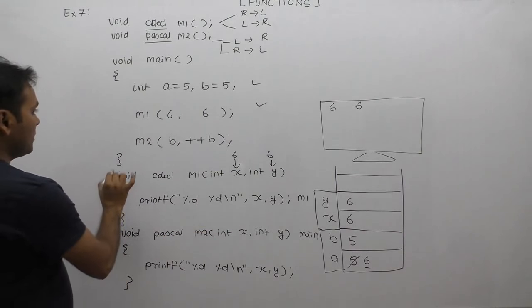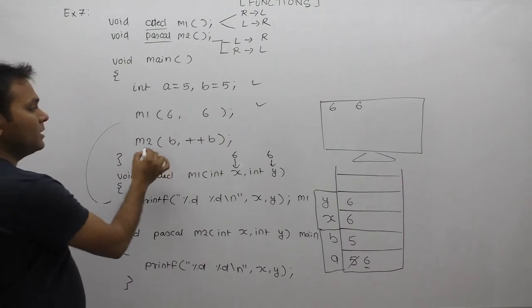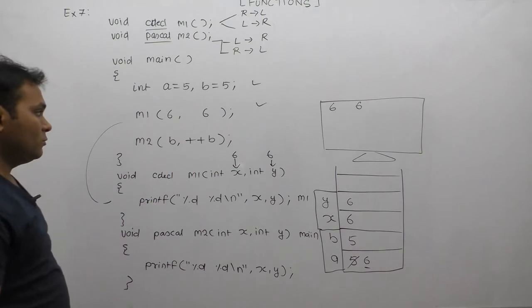Next, control returns back to the calling place. After that, second time we call function m2.